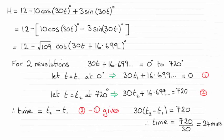Hi there. I think this part of the question is quite tricky actually, but we're asked to find the time it takes to make two revolutions and you can see that it turns out to be 720 divided by 30 which is 24 minutes.